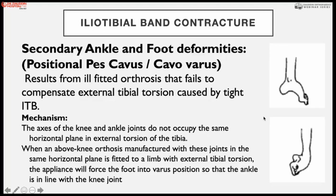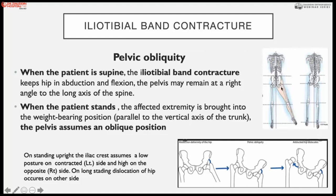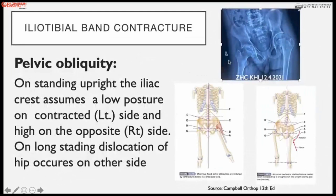Pelvic obliquity is produced because of abduction contracture and flexion contracture at the hip joint. When the patient lies or sleeps, there is apparent shortening; when extending, they place both feet on the floor to compensate, producing pelvic obliquity in the chronic phase. Because of this pelvic obliquity, contracture on one side leads to gradual subluxation and then dislocation on the other side. The pelvic obliquity is produced by abductors, flexors, and particularly the iliotibial band.